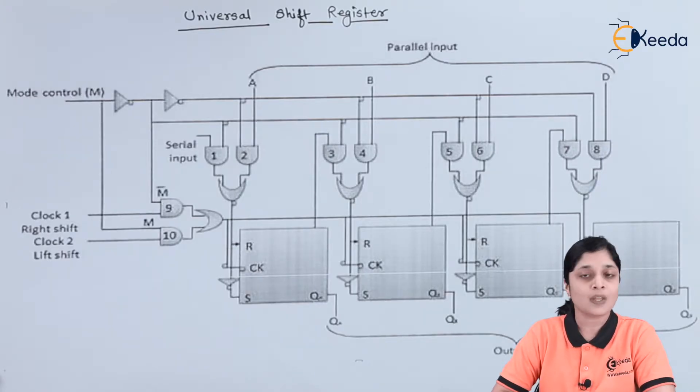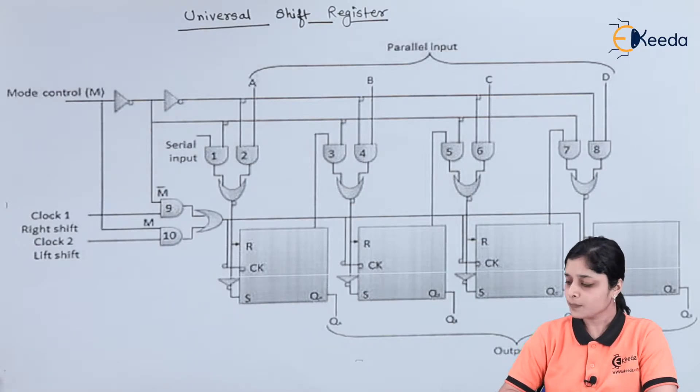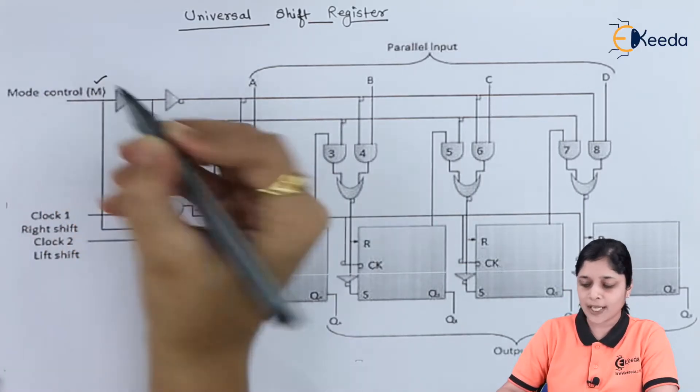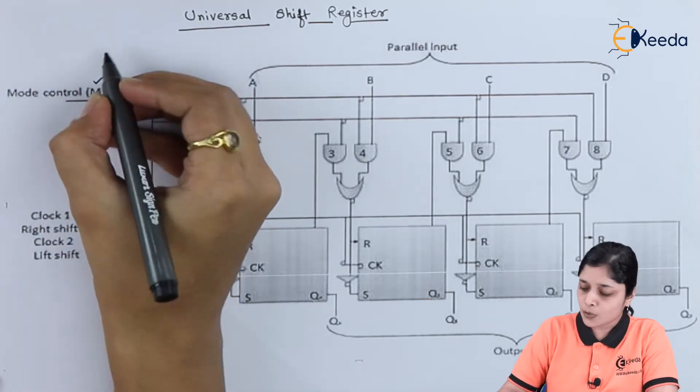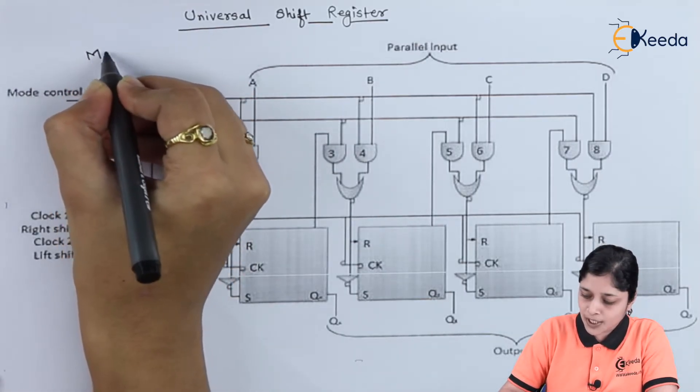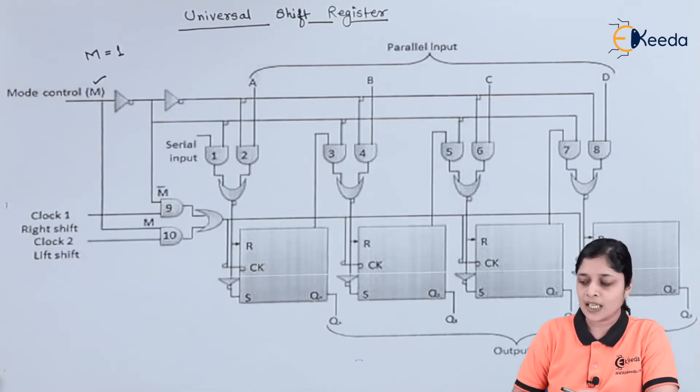Now we will discuss the performance of universal shift registers on the basis of following points. In this diagram you have to consider the control input M. Whenever this control input M equals to one, then it will load the data parallelly.